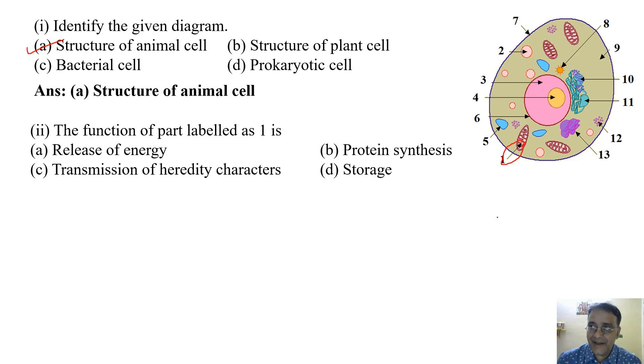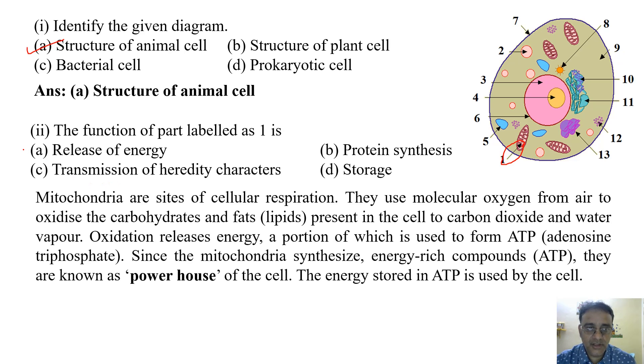Oxidation releases energy, a portion of which is used to form ATP (adenosine triphosphate). Since the mitochondria synthesize energy-rich compound ATP, they are known as powerhouse of the cell. The energy stored in ATP is used by the cell. So here the discussion is all about energy. The correct option is (a).